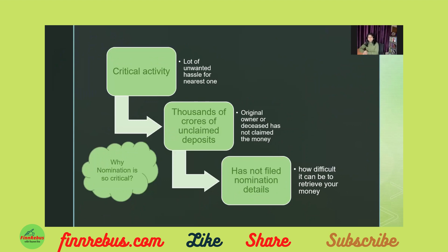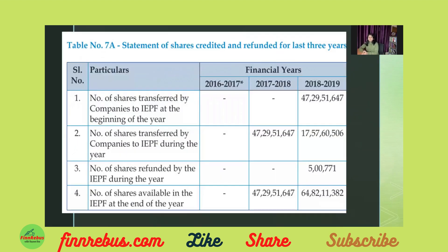Why is the nomination so critical? It is critical because people who are just creating wealth forget to add the nominee. There are thousands of crores of unclaimed deposits with the government where ownership is debatable and there is no detail available. Not adding the nominee is a key reason for this — it creates a very complex and lengthy process that we leave for our loved ones to deal with.